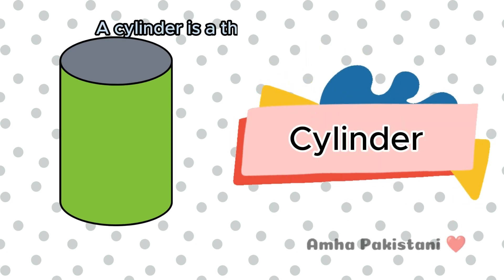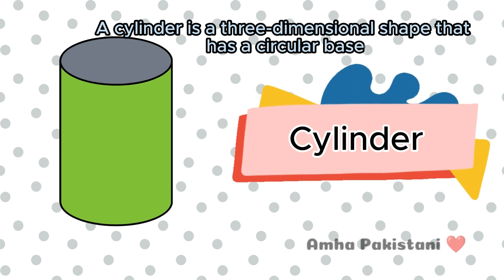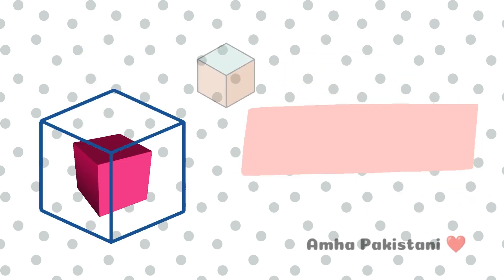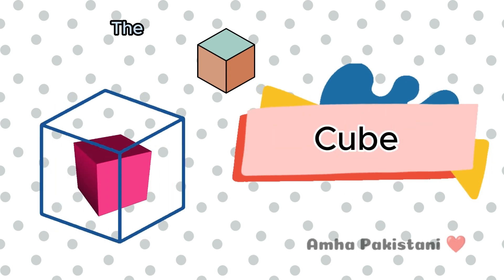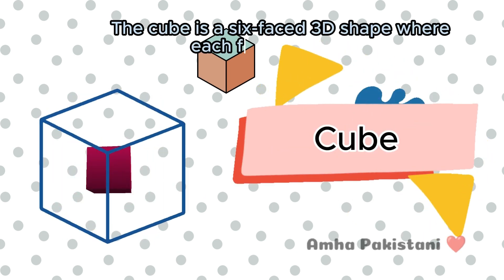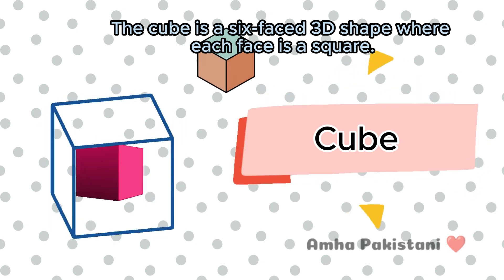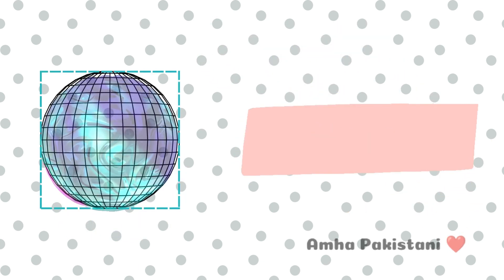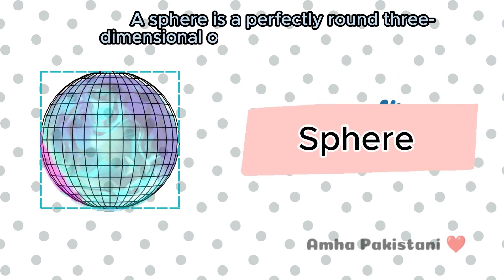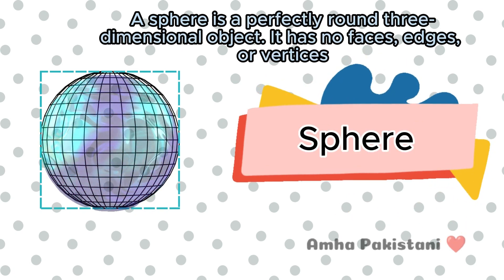Cylinder. A cylinder is a three-dimensional shape that has a circular base. Cylinder. Cube. The cube is a six-faced 3D shape where each face is a square. Cube. Sphere. A sphere is a perfectly round three-dimensional object. It has no faces, edges, or vertices. Sphere.